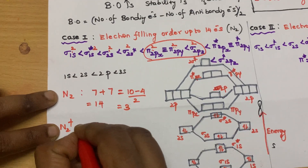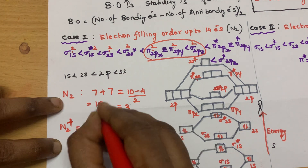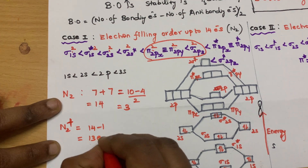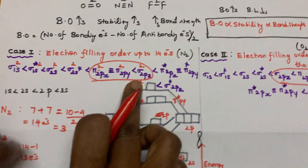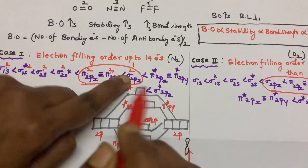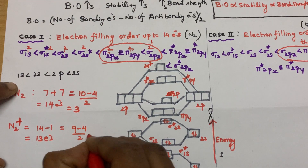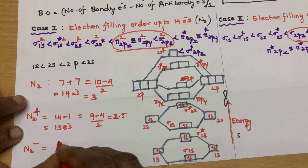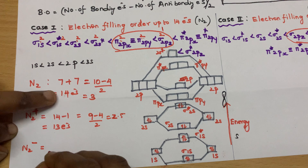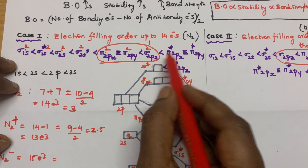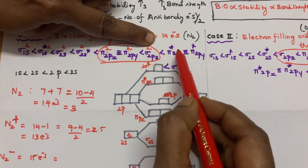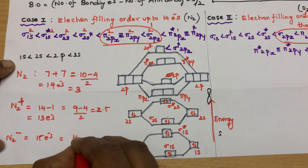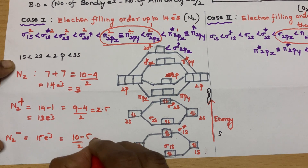For N2⁺: plus means one electron removed. So 7 plus 7 equals 14, minus 1 equals 13 electrons. Remove 1 electron from the highest occupied orbital. So it becomes 9 minus 4 divided by 2 equals 2.5. For N2⁻: nitrogen plus 1 extra electron, so 15 electrons. The extra electron goes into the next orbital, giving 10 minus 5 divided by 2 equals 2.5.